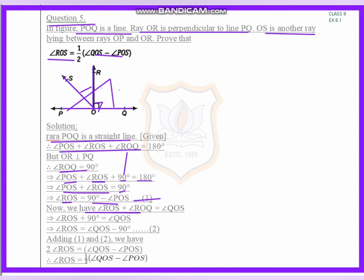We know angle ROS plus angle ROQ equals angle QOS. Now angle ROS plus 90 equals angle QOS, so angle ROS equals angle QOS minus 90. This is equation 2.